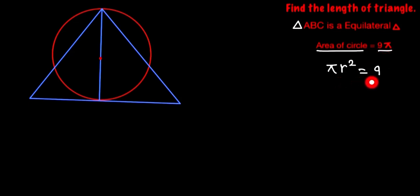So area of circle is πr², so here π and π cancel out, so r is equal to 3. This is our radius. Just look at the figure. In the circle, the radius of the circle is this, so the length of this is 3 because it is the radius.